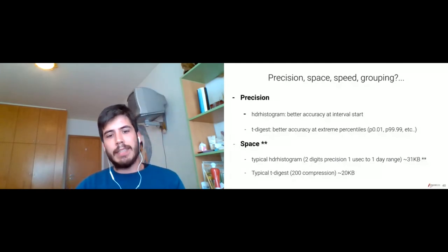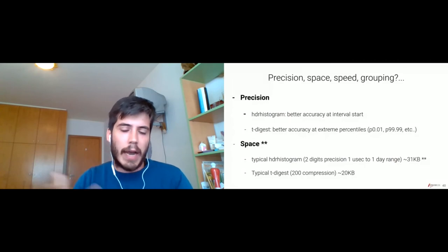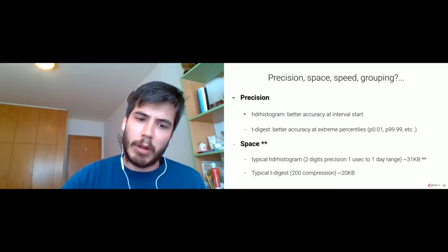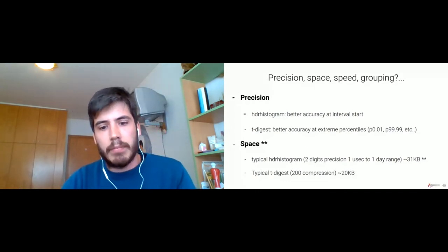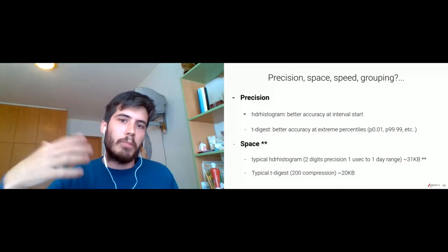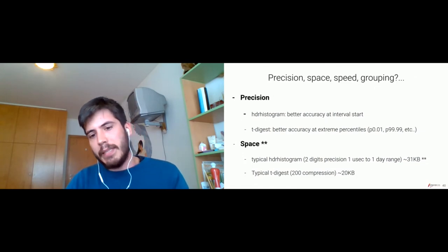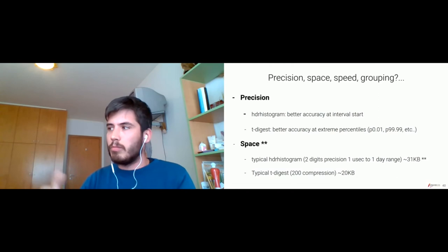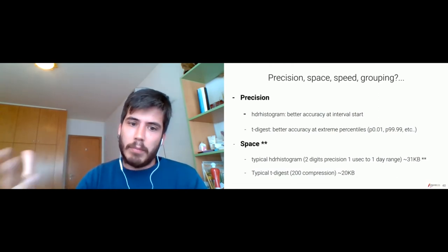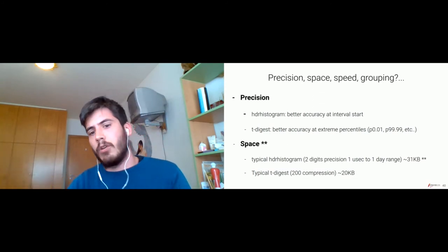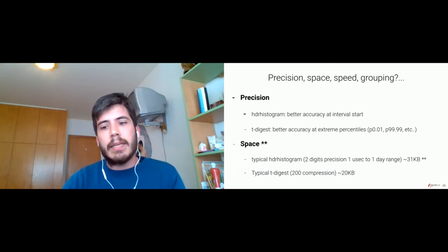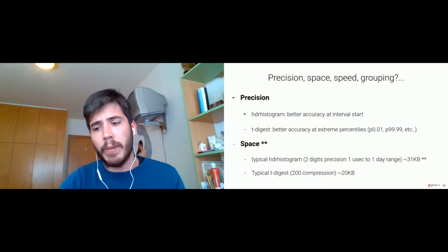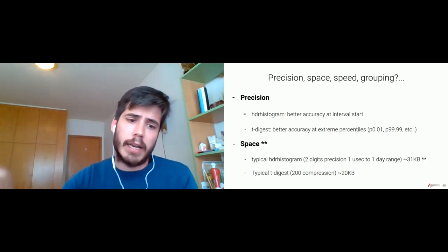Regarding space efficiency: typically on a typical usage of the High Dynamic Range histogram, you will need around 31KB to have a full range of observations of one day with microsecond precision. Around the T-digest, you should expect an overall space usage of around 20 kilobytes. But it's important to state that for the HDR histogram specifically, this is very much bound towards your interval range and the precision you want. So these values should be taken just as a reference — you should deep dive on each implementation to understand what the memory footprint would be.